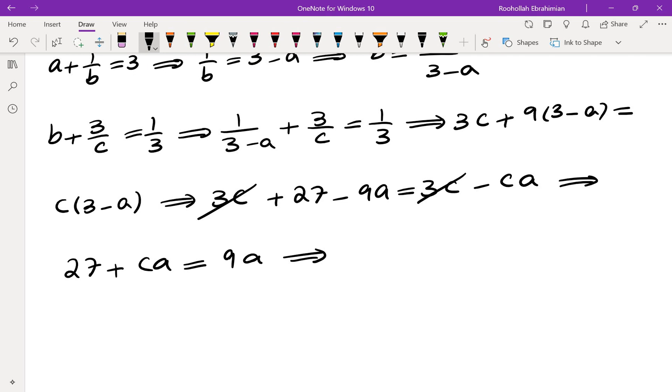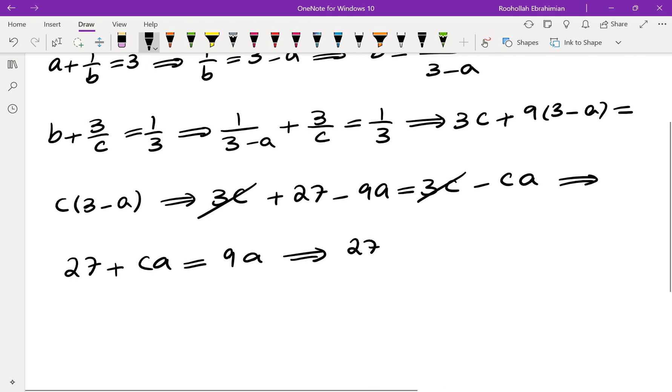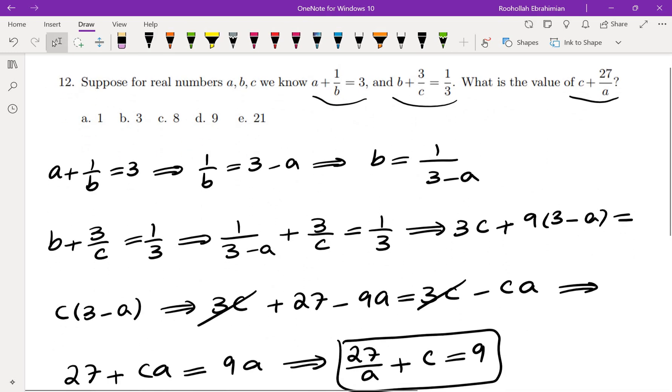If we divide both sides by a, we're going to get 27 over a plus c equals 9, which is exactly what we had. So the answer is D.